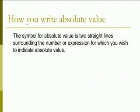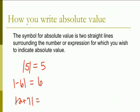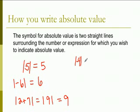How do you write absolute value? The symbol for absolute value is two straight vertical lines, with the number inside being what you're trying to find. The absolute value of five is five. The absolute value of negative six is six. The absolute value of two plus seven equals nine. The absolute value of negative four is four. The absolute value sign is just two straight lines.